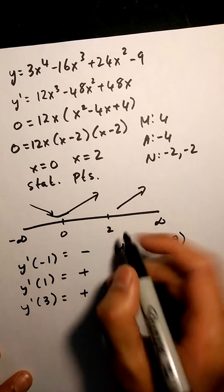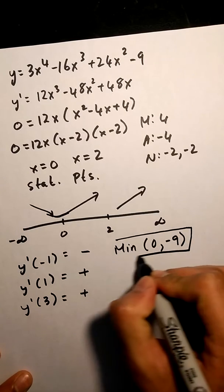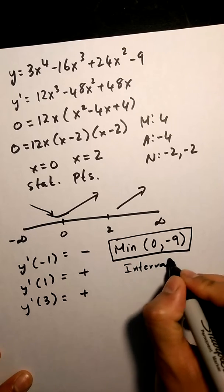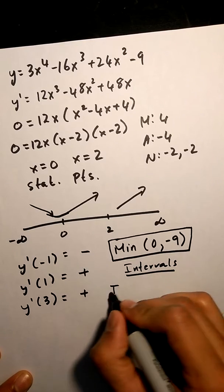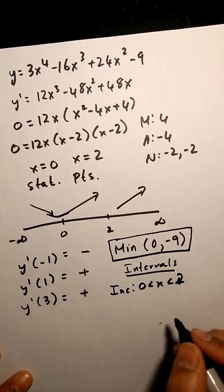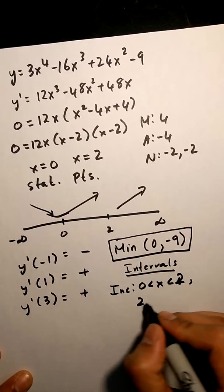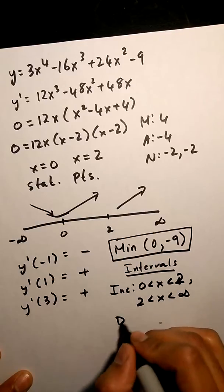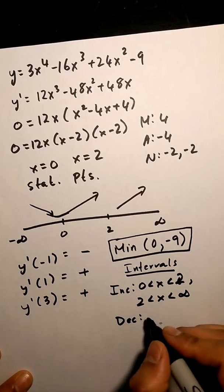So I know my minimum, do my intervals - two intervals of increase and one interval of decrease.